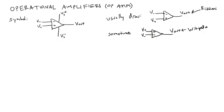The equation that governs the behavior of an op-amp is Vout equals A times V-plus minus V-minus, where A is our gain.